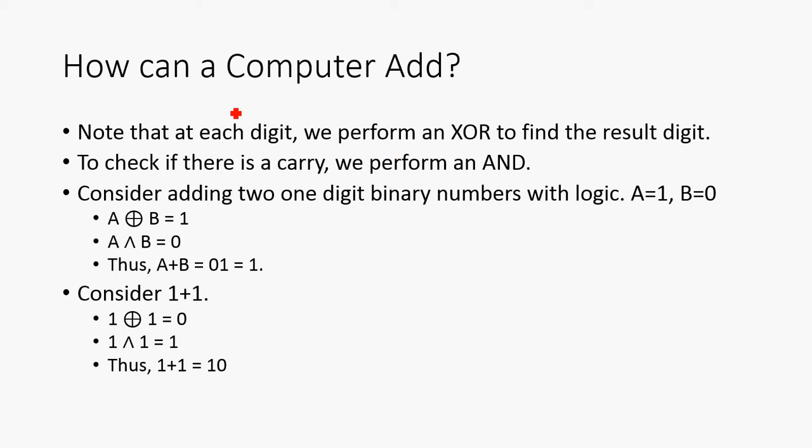So how can a computer add? Note that at each digit, we performed an exclusive OR to find the resulting digit. To check if there's a carry, we performed an AND. So consider adding two one-digit binary numbers with logic. Let A be 1 and B be 0. A exclusive OR B is going to be 1 XOR 0, and that's going to be 1. So that'll be the result of our addition. Next, we're going to check if there's a carry. 1 AND 0, that's clearly 0. So A plus B is 0, 1, which is 1. Let's consider the case of 1 plus 1. Well, 1 XOR 1 is 0, clearly. And then 1 AND 1 is going to be 1. Thus 1 plus 1 is 0, carry the 1, or 1, 0.